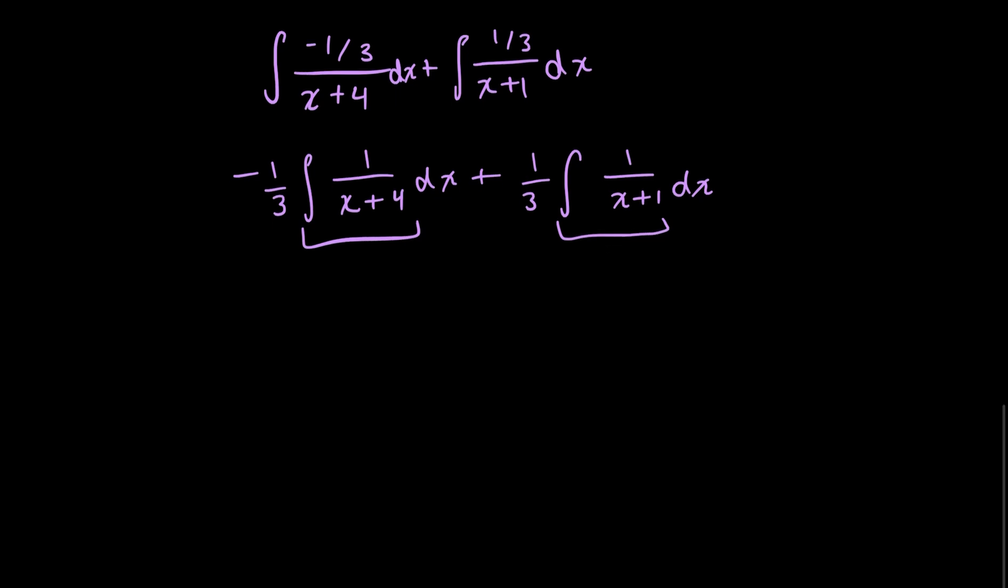So for my first one, I'd have 1 over 3 ln x plus 4. And then the second one is the same thing. It's ln of whatever the denominator is. x plus 1 plus constant c. And this is a good enough answer. You've come to the solution that's correct.